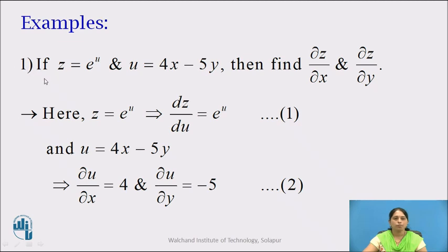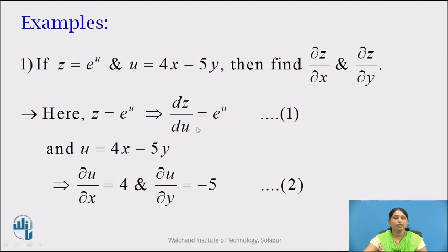First example: if z = e^u and u = 4x − 5y, find ∂z/∂x and ∂z/∂y. Here z = e^u, so z is a function of single variable u. We find dz/du = e^u. We will call this equation number 1.